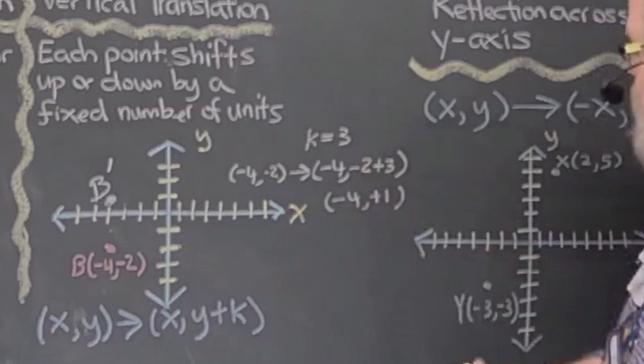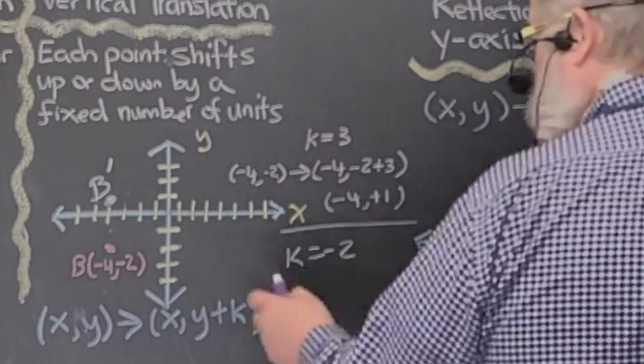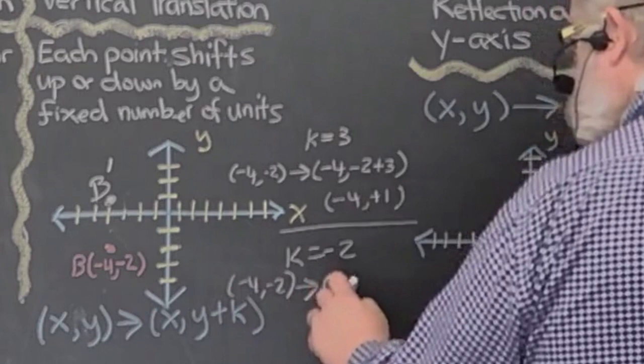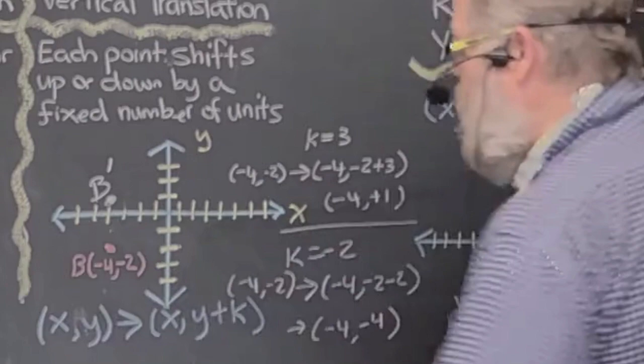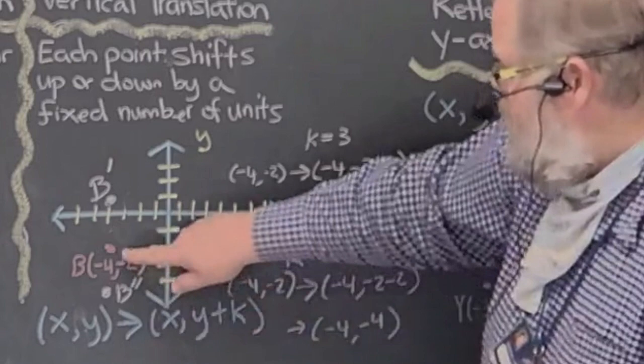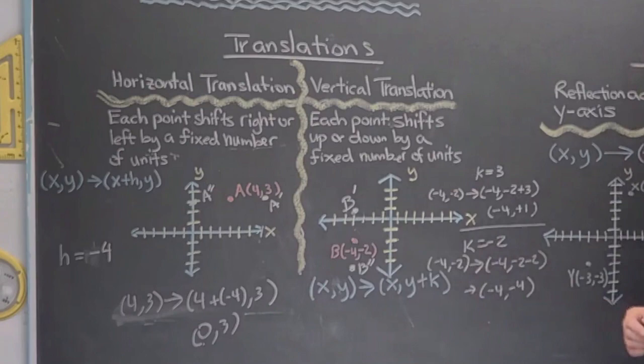Now let K equal negative two. The ordered pair negative four comma negative two becomes negative four comma negative two minus two, which is negative four comma negative four. That's B double prime — a shift downwards two units. So horizontal translations go left and right, and vertical translations go up and down.